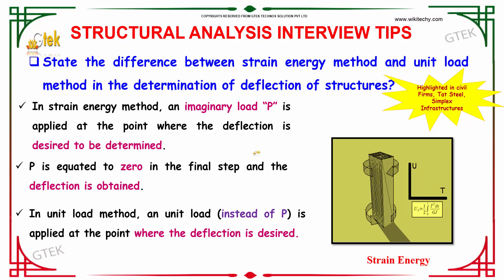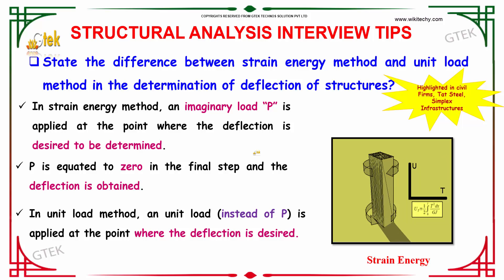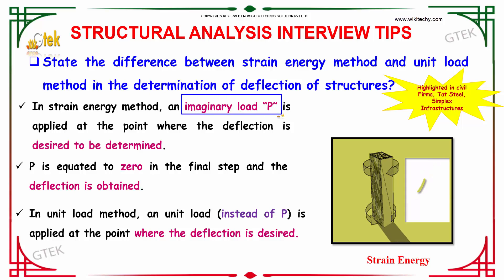State the difference between strain energy method and unit load method in the determination of deflection of structures. In the strain energy method, an imaginary load, say P, is applied to the point where the deflection is desired to be determined. P is then equated to zero in the final step, and the deflection is obtained.